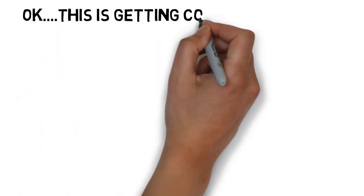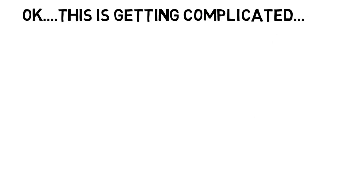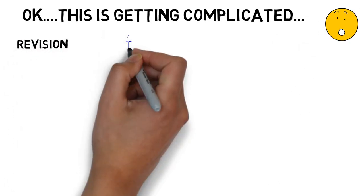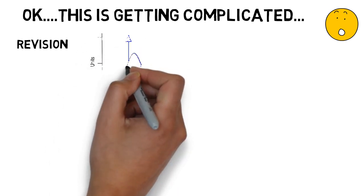Fluorochromes are defined as the photon emission as the electron returns from an excited state to its ground state. Okay, this is getting complicated, so let's review.